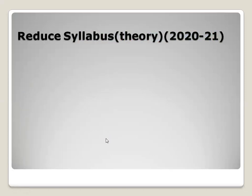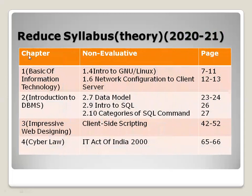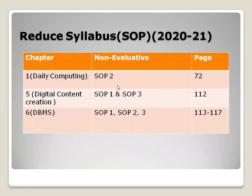For the reduced syllabus for 2020-21, in Chapter 1 sections 1.4 and 1.6 — introduction to Linux and network configuration — are reduced. For introduction to DBMS, sections 2.7, 2.9, and 2.10 are reduced. Web designing, client-side scripting, and in cyber law the IT Act of 2000 sections are also reduced. This represents the 25% reduced syllabus. For SOP practicals, daily computing SOP 2, digital content, and DBMS SOP 1, SOP 2, and SOP 3 are non-evaluative.